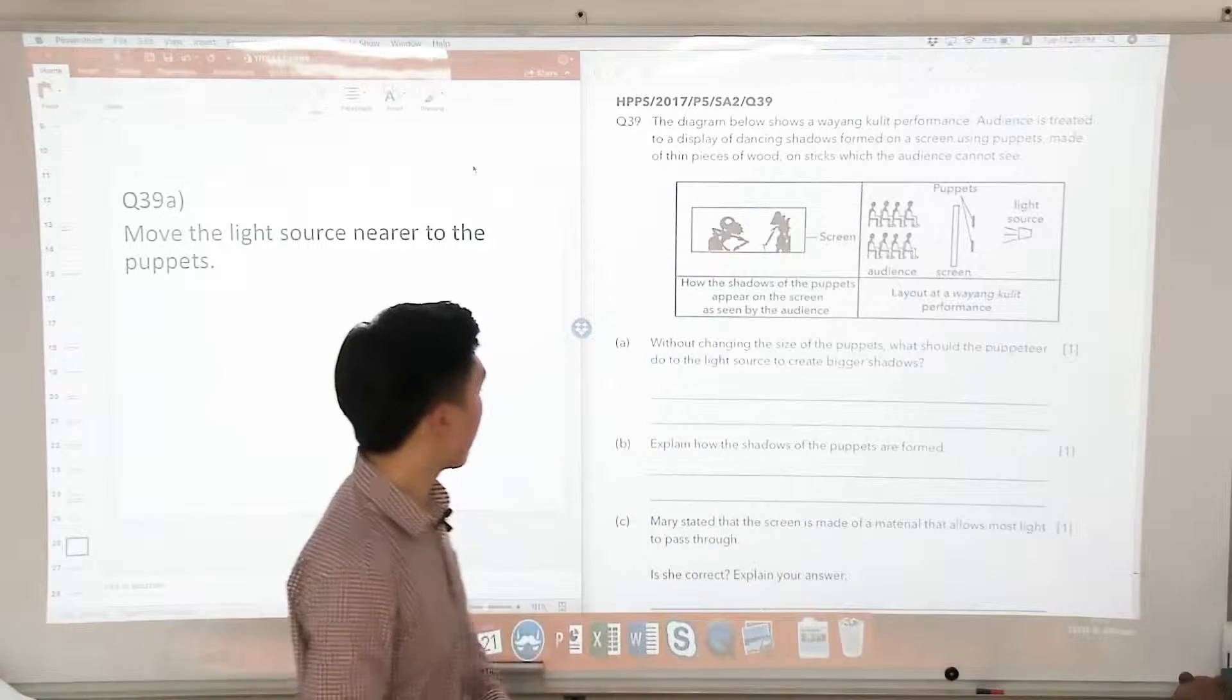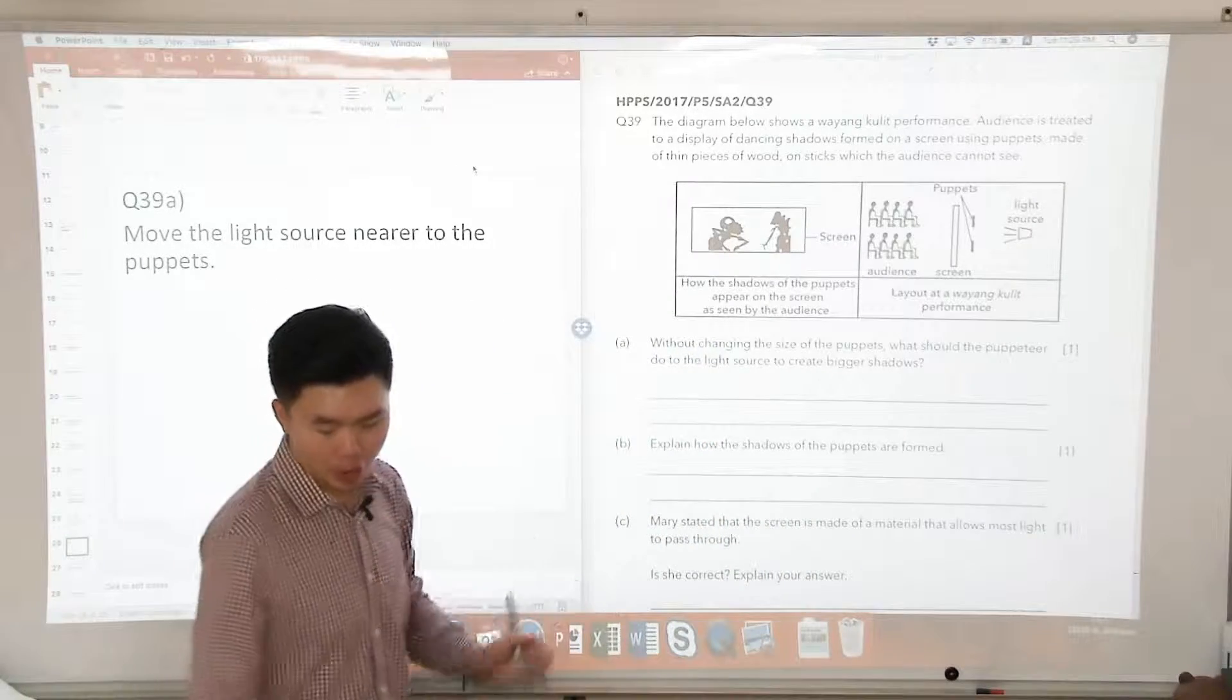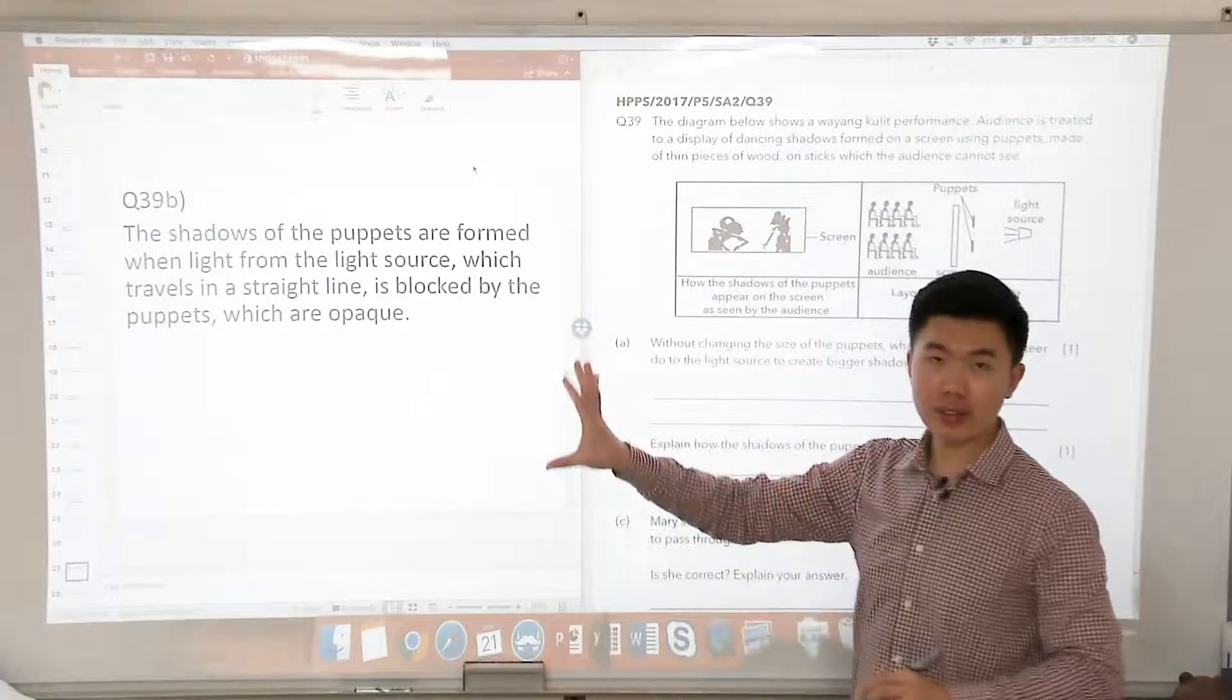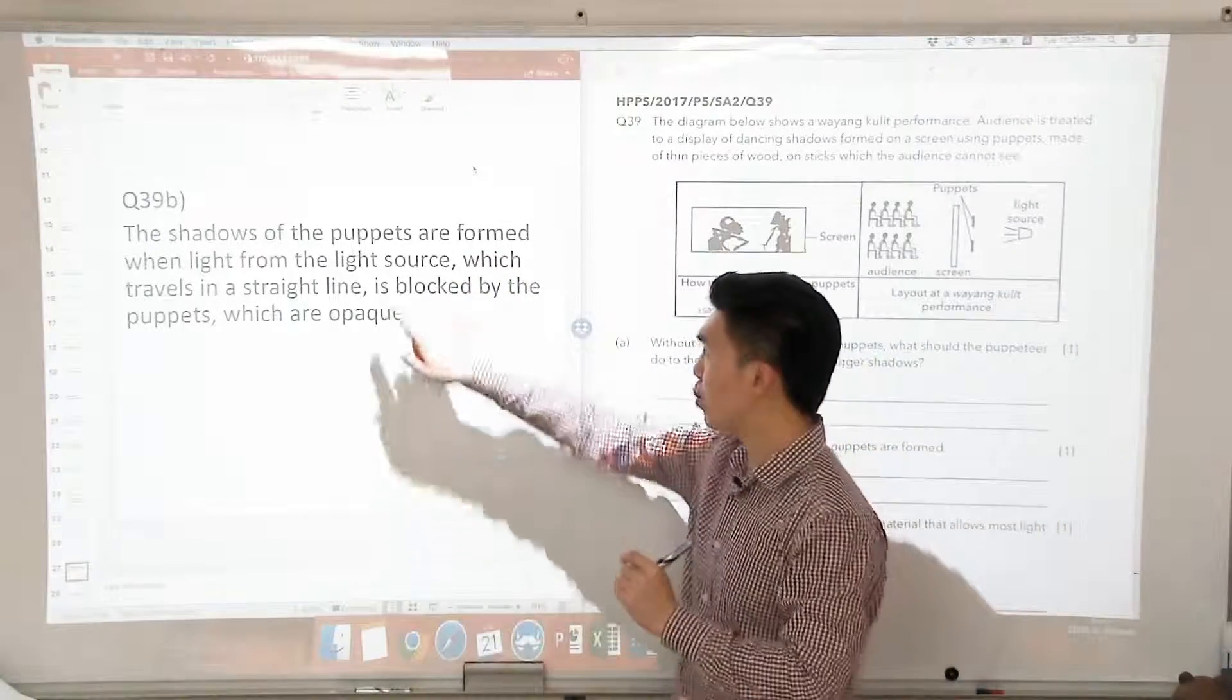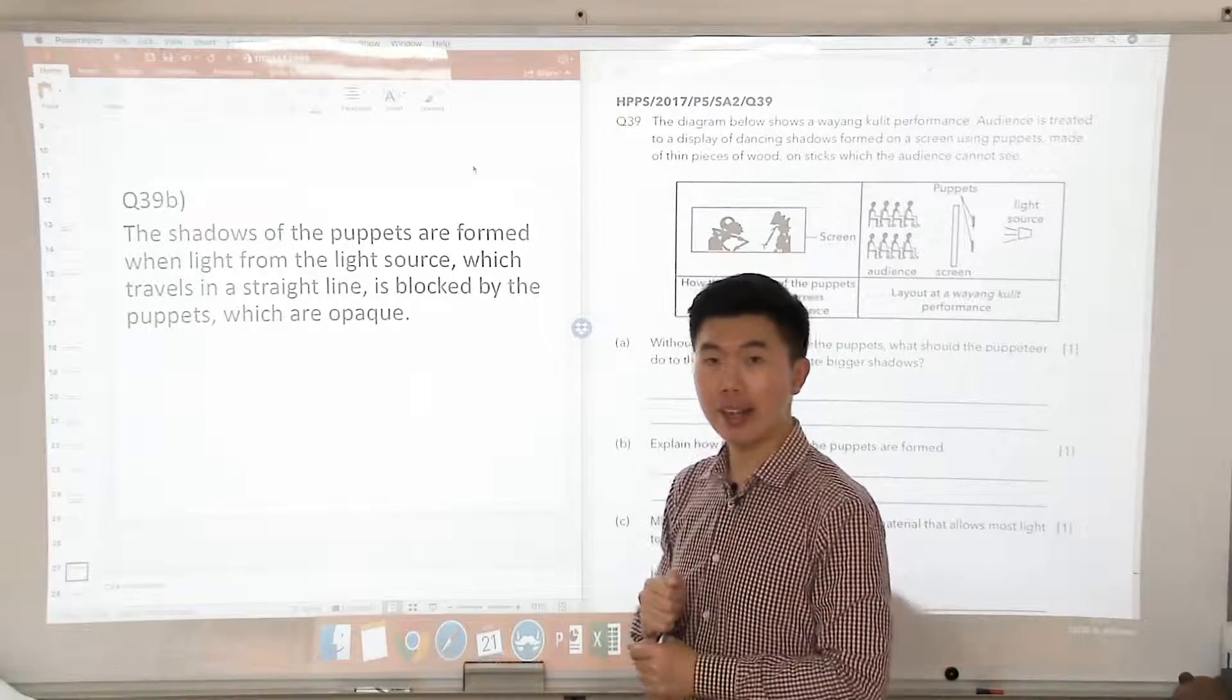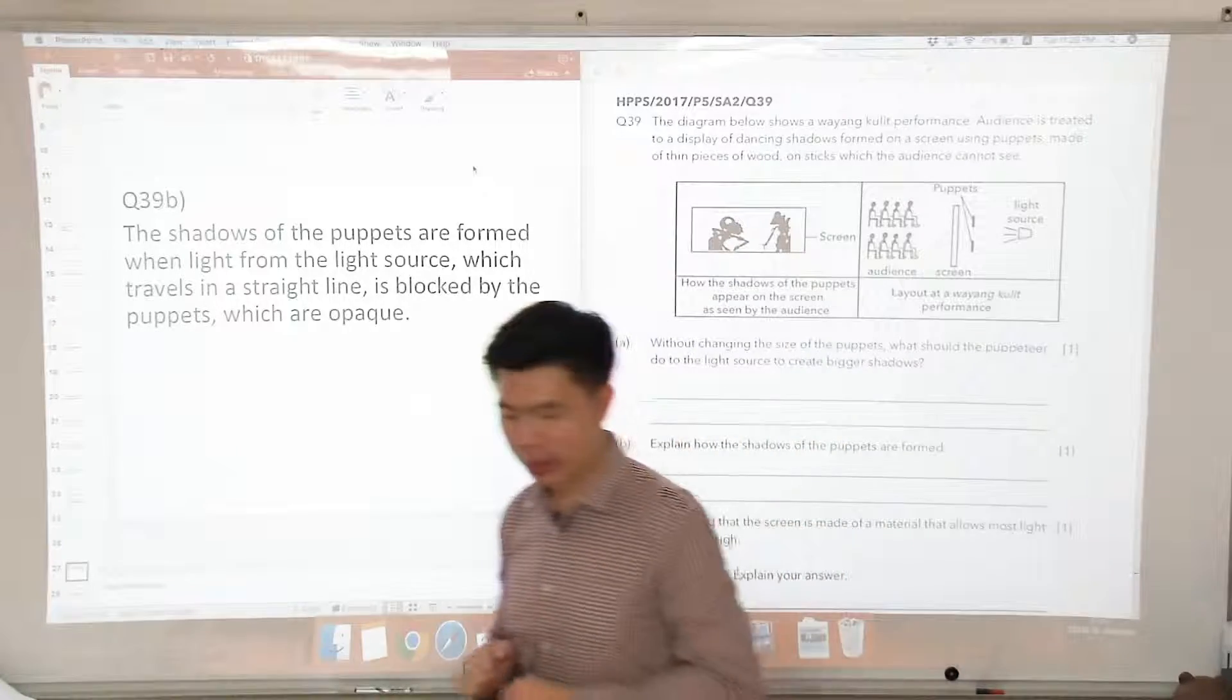So in this case, explain how the shadows of the puppets are formed. The shadows of the puppets are formed when light from the light source, which travels in a straight line, is blocked by the puppets, and we must specify which are opaque. So this one is quite simple.